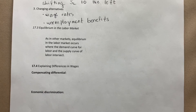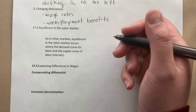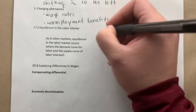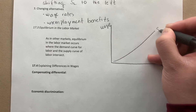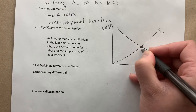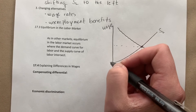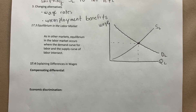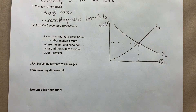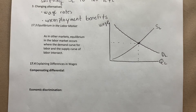As far as equilibrium in the labor market, we want to think about where the demand curve and the supply curve intersect. On a graph with wage on the vertical axis and quantity of labor on the horizontal axis, the supply of labor and demand of labor intersect at the equilibrium wage and quantity. You should be able to read a graph and understand what shifting supply or demand does to the wage rate and quantity of labor.